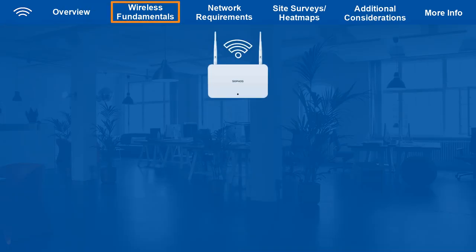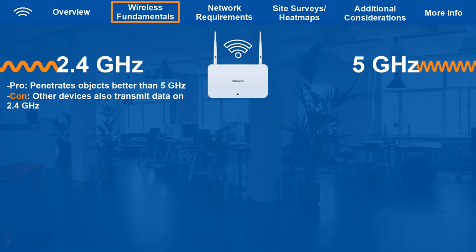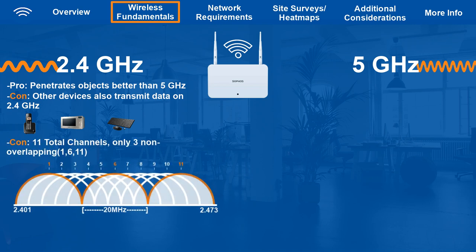Let's start by talking about frequencies. Wireless networks can function off two different frequency bands: 2.4 and 5 GHz. It's important to understand the attributes of both frequencies as they both have pros and cons. The 2.4 GHz frequency band can penetrate objects better than 5 GHz so it can achieve a longer range. It's a shared frequency band, so APs aren't the only devices that use 2.4 GHz — cordless phones, microwaves, and Bluetooth devices also use 2.4 GHz and can cause interference. The 2.4 GHz band has 11 channels, but only three — channels 1, 6, and 11 — are non-overlapping, so those are the only channels we can use without running into channel overlap issues.